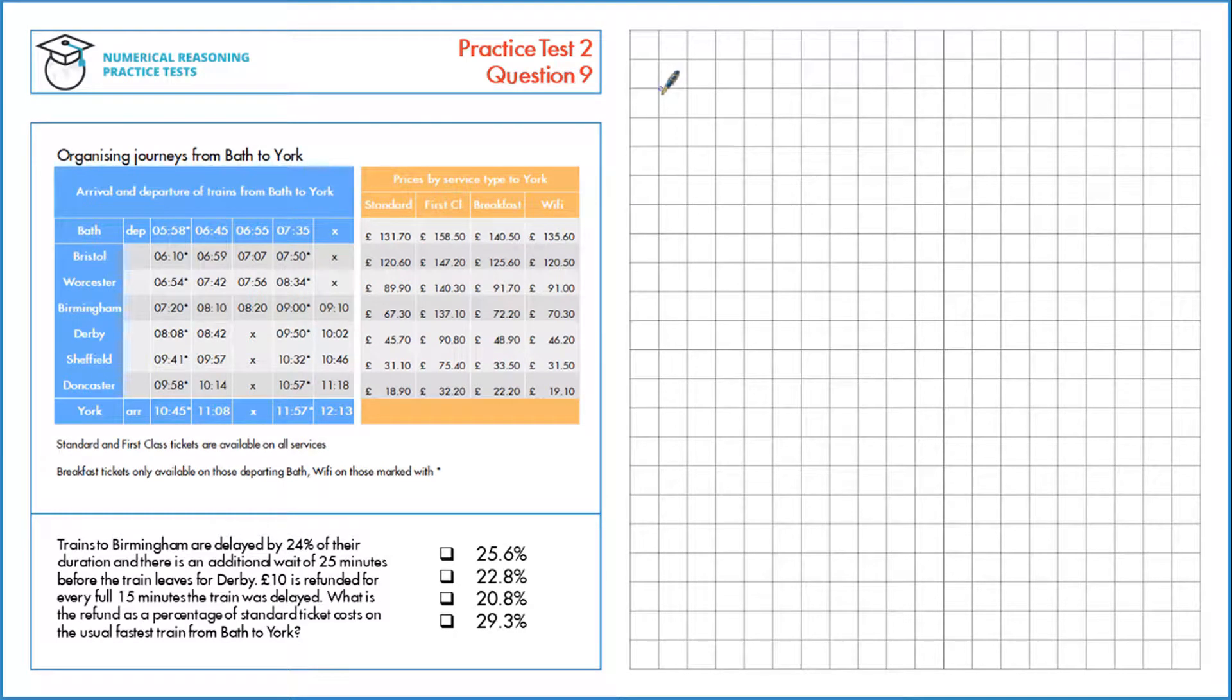Trains to Birmingham are delayed by 24% of their duration and there is an additional wait of 25 minutes before the train leaves for Derby. £10 is refunded for every full 15 minutes the train was delayed. What is the refund as a percentage of standard ticket costs on the usual fastest train from Bath to York?